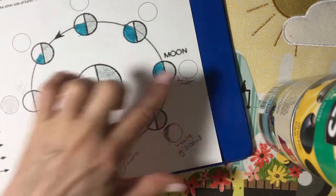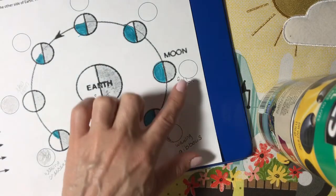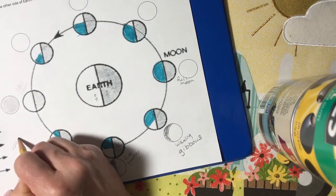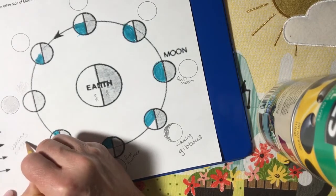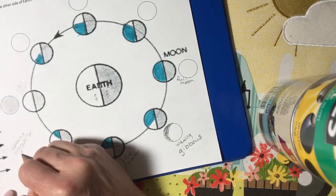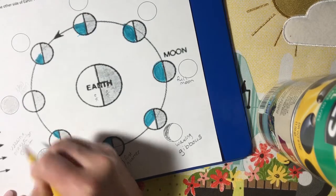So again, these are your waxing phases, because waxing means getting bigger on the right hand side. Add that to your notes.